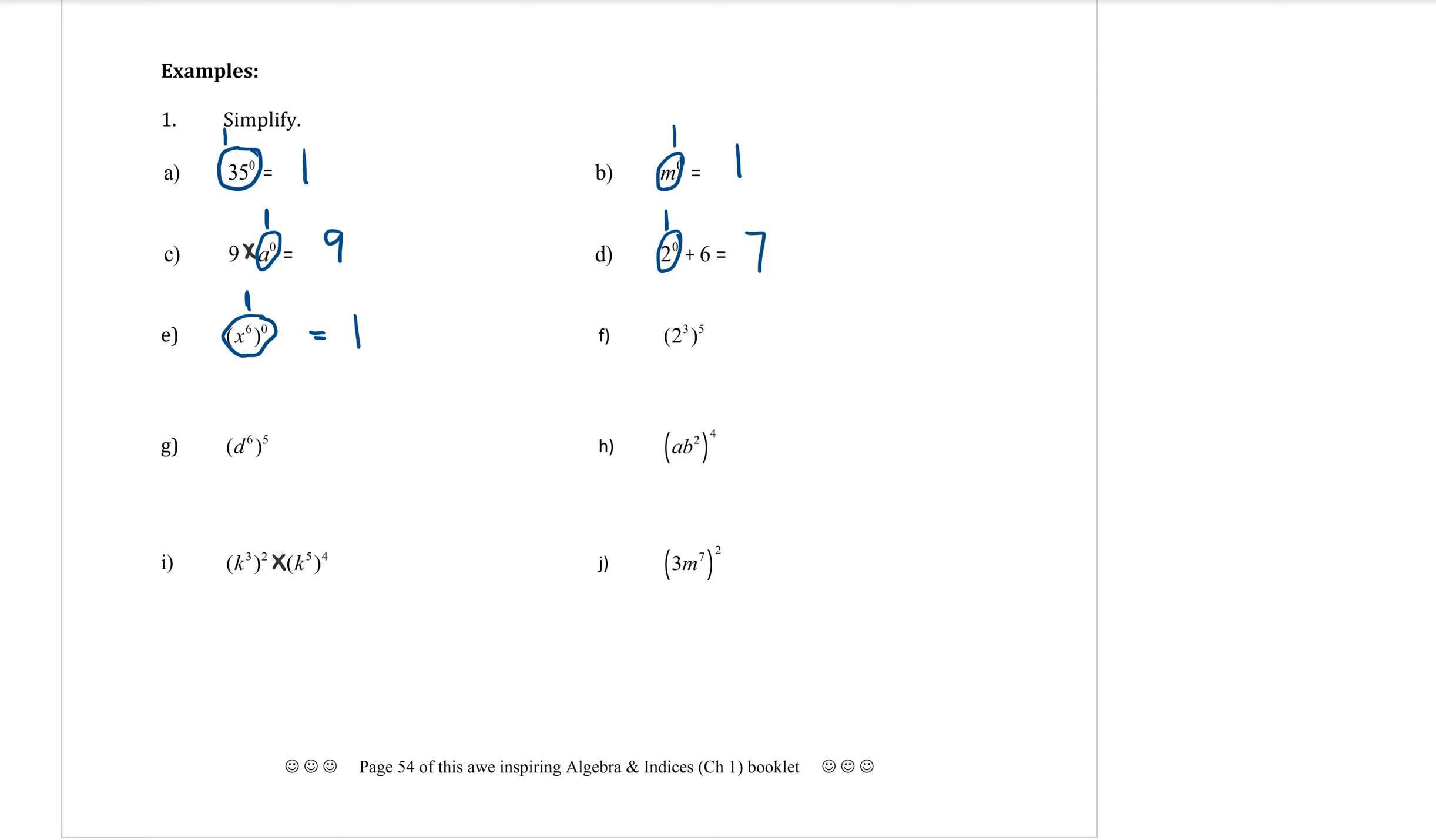The rest of these questions here are going to involve the second rule. Expanding out the brackets when we have two powers there. What we do is we keep the base. So for F, two is the base, two is the base. And we multiply the powers. Three times five is 15. So it's two to the power of 15. That's one that had a number as the base.